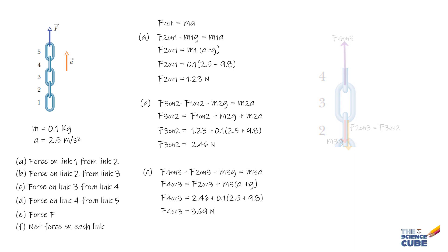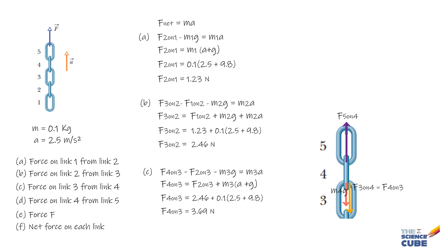Next question: we have to find the force on link 4 from link 5. Once again, we make the free body diagram of link 4 and apply the same logic. The equation we get is F5 on 4 minus F3 on 4 minus M4G equals M4A. When you solve for F5 on 4, you get a value of 4.92 Newtons.